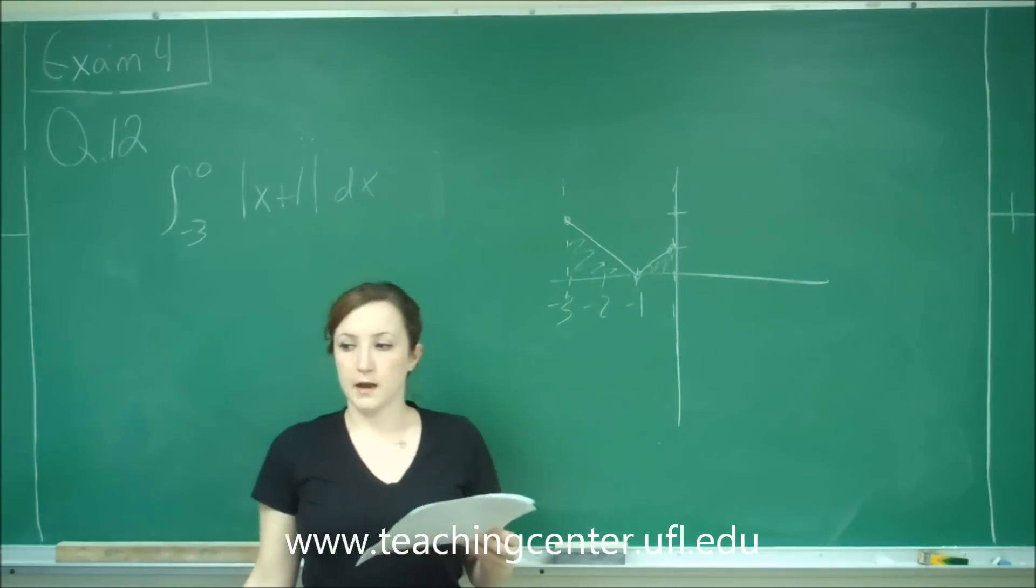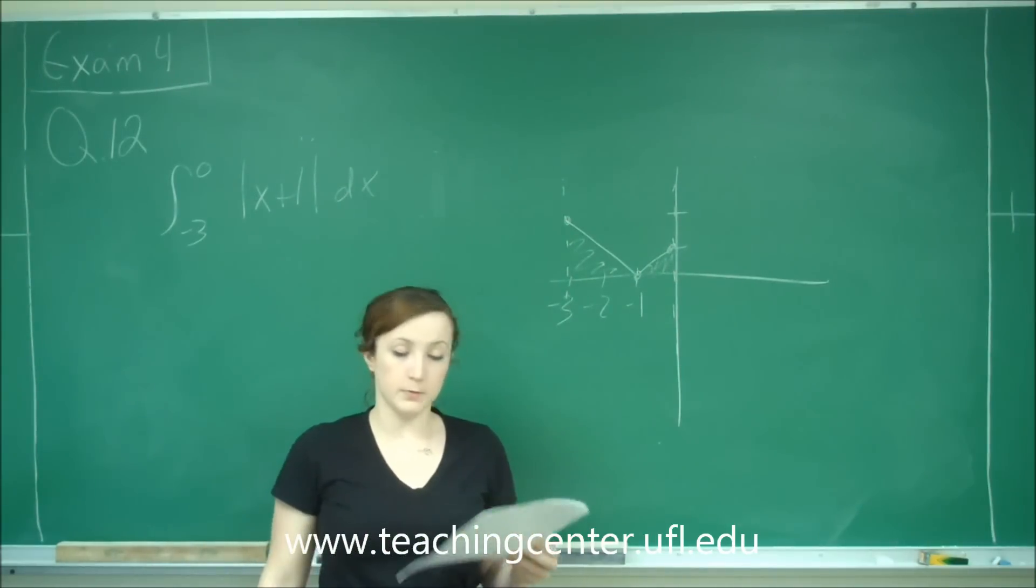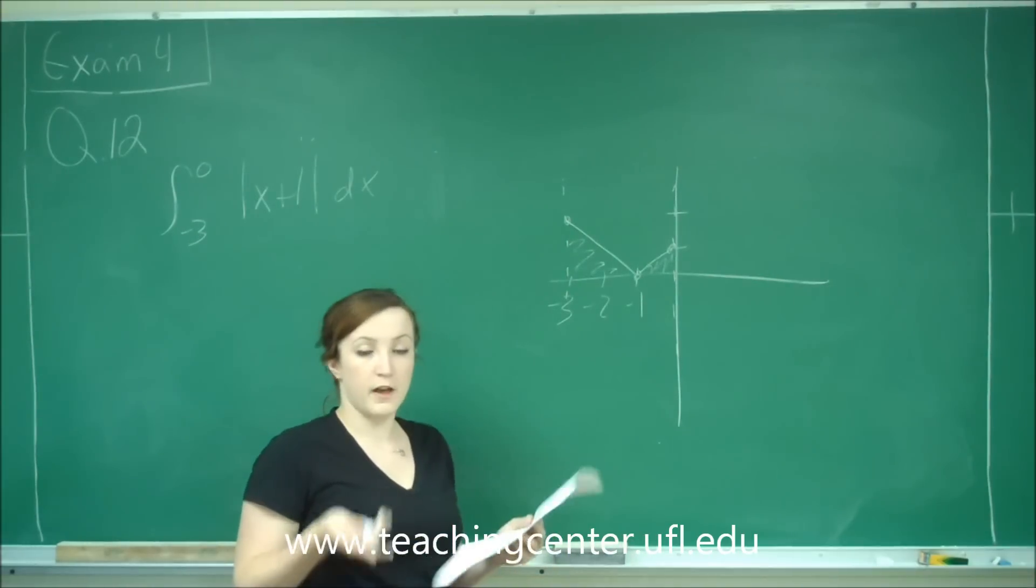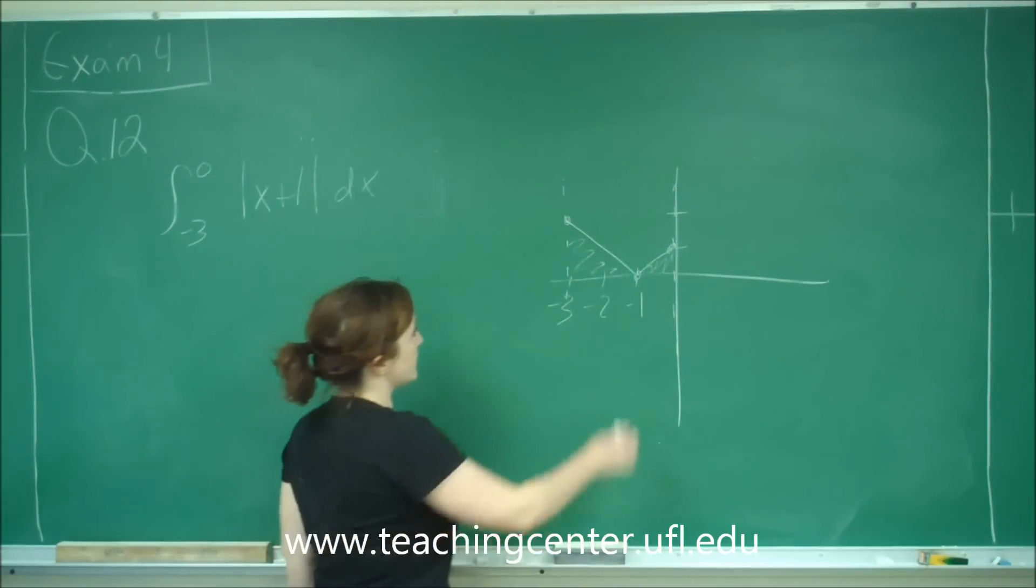It gives us the hint that we would want to sketch the region represented by the integral. So we're going to sketch the graph of the absolute value of x plus 1 from negative 3 to 0. And I did that here.